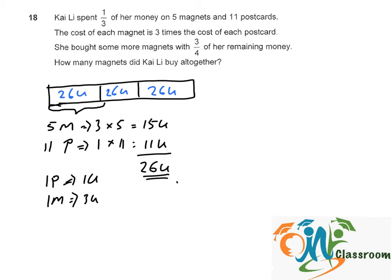So now she had 26 units times 3, which is 78 units in total.